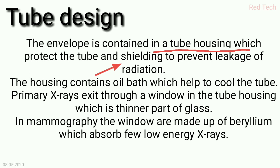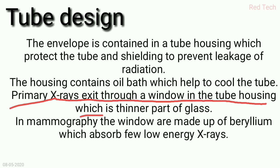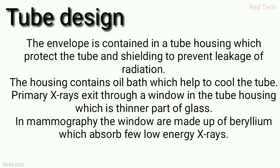The envelope is contained within a tube housing which protects the tube, provides shielding, and prevents leakage of radiation. To prevent radiation leakage, the housing contains an oil bath which also helps to cool the tube. Primary x-rays exit through a window — a thin glass window present in the tube housing.